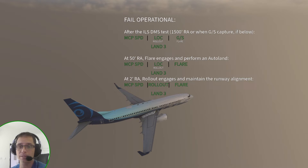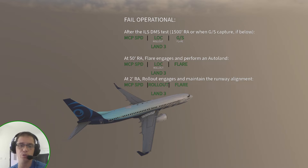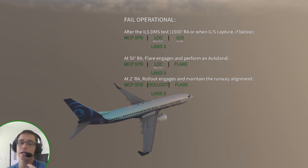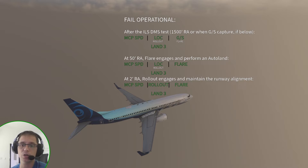Main differences from fail passive: on the fail operational, you also have rollout mode armed and engaged at 2 feet. The autopilot indication changes from single channel to land 3, not to command. It can also change to land 2 with some degradation on the airplane system — in that case it becomes a mix of fail passive capability with rollout. But in a perfect fail operational airplane, you will have rollout armed, flare armed, and land 3 just below 1500 feet.